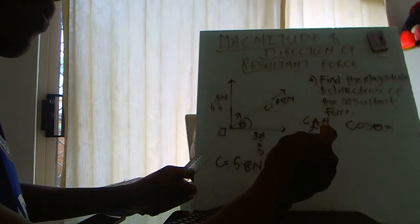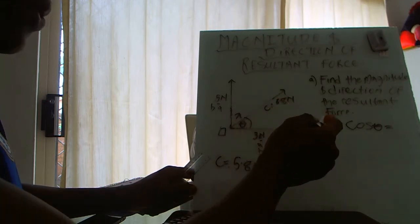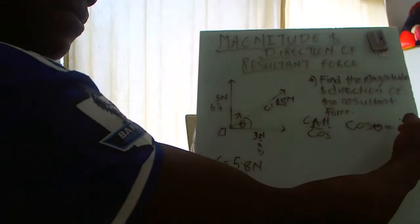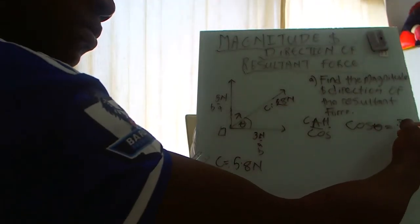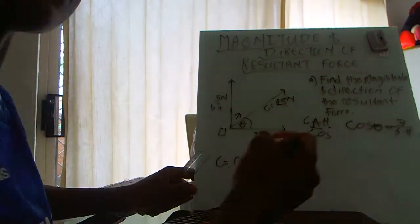over, divided by the hypotenuse which is 5.8. So my adjacent is 3 over 5.8.